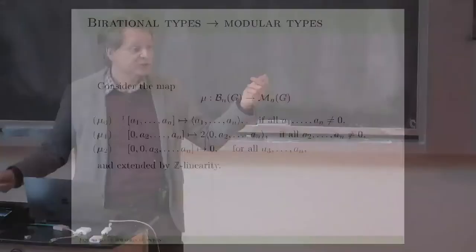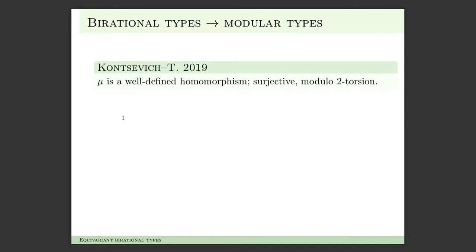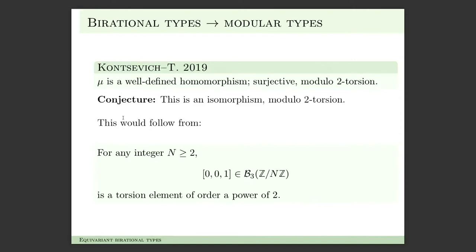We can also keep the birational type of X_alpha, giving an enhancement of the old Burnside rings. There is a natural map from the square-bracket group to the angle-bracket group — it's almost the same except there is a factor of 2. A theorem taking around 10 pages shows that it's actually a well-defined surjective homomorphism modulo 2-torsion. We conjecture it's an isomorphism modulo 2-torsion, and the conjecture boils down to the following: the class of (0, 0, 1) in B3 of Z mod NZ is a torsion element of order a power of 2 for all N. You can try this on a computer and it works.